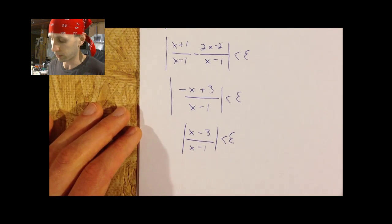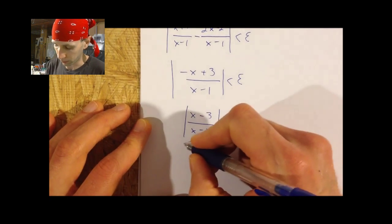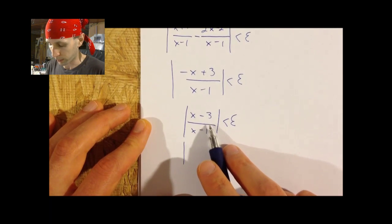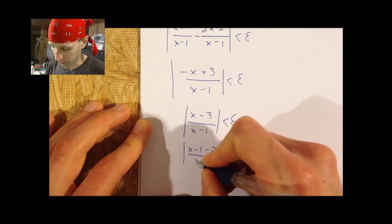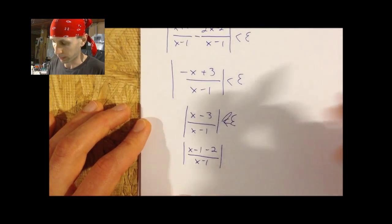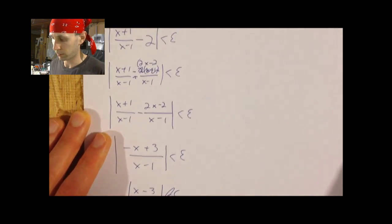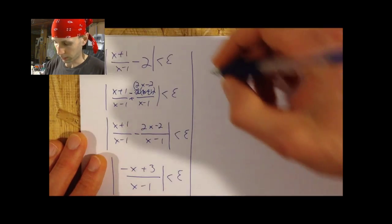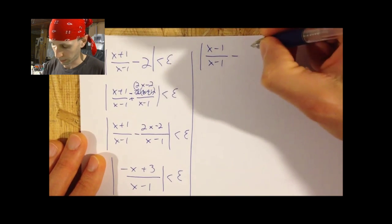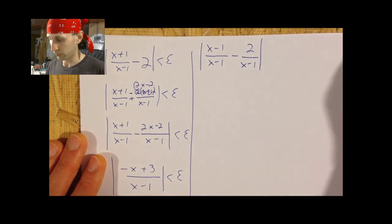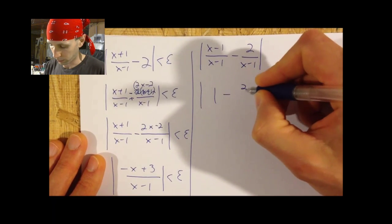So just to keep that in mind as we continue. I'm going to do a little algebra trick on it. Instead of writing this as minus three, I'm going to write it as minus one minus two, so x minus one minus two over x minus one. The purpose of that is I can now break this into two different fractions: x minus one over x minus one, minus two over x minus one. And now this first fraction equals one, so that is one minus two over x minus one.